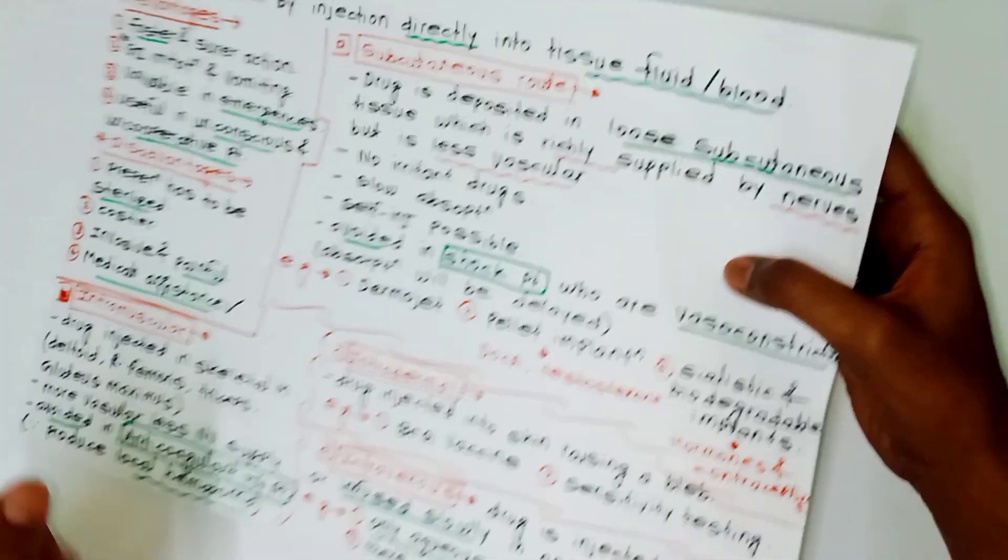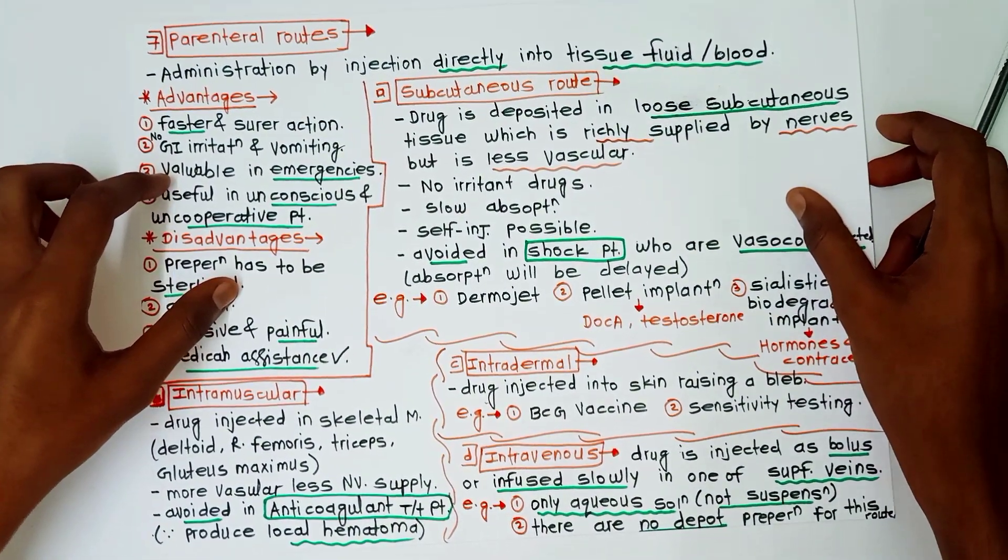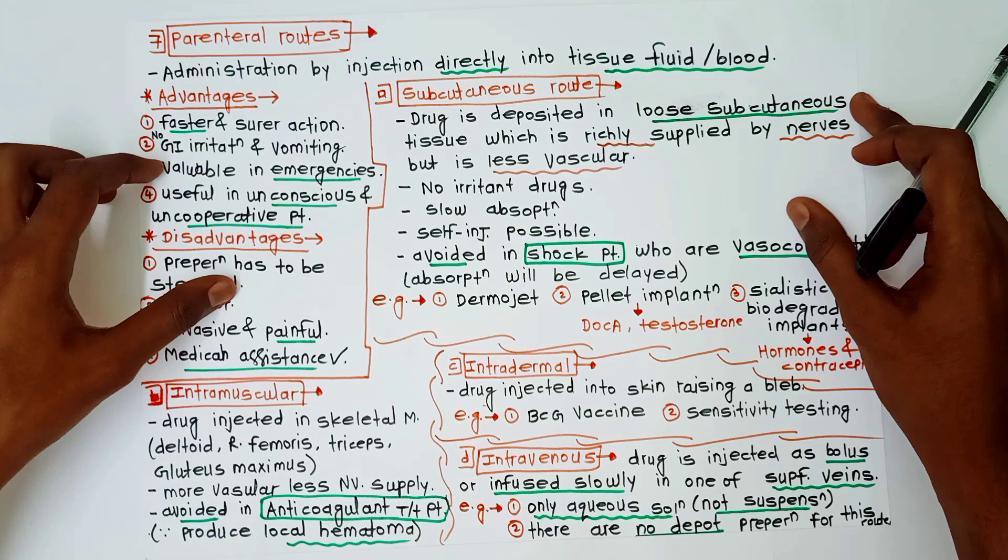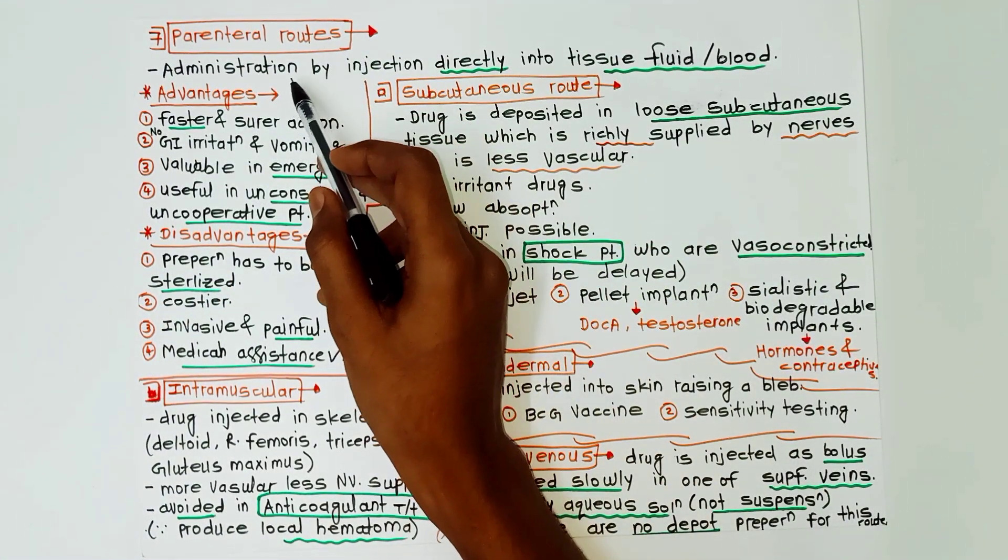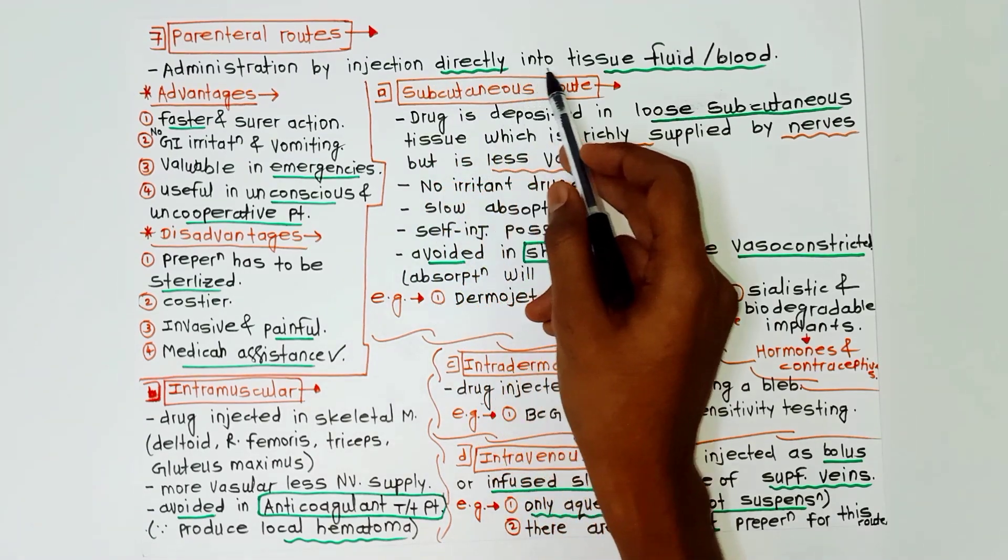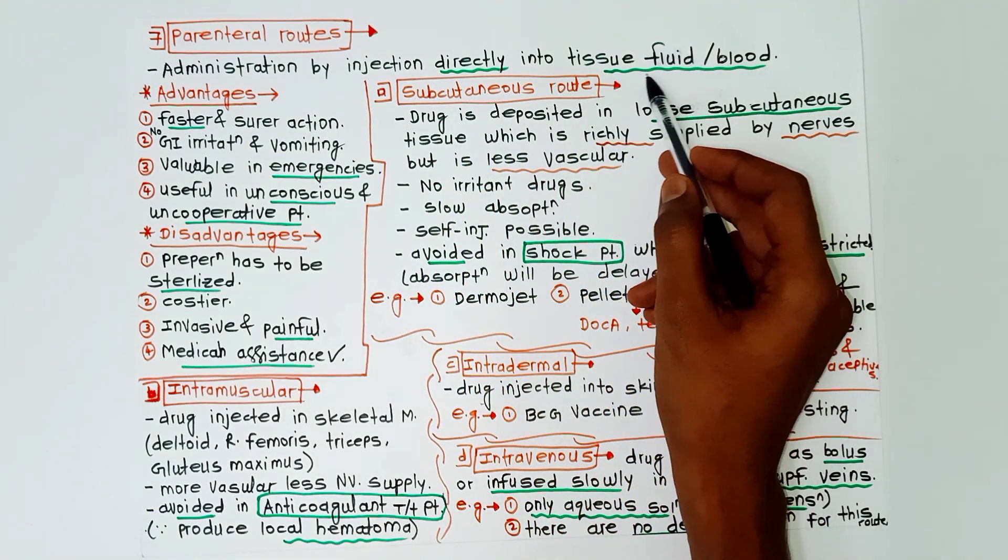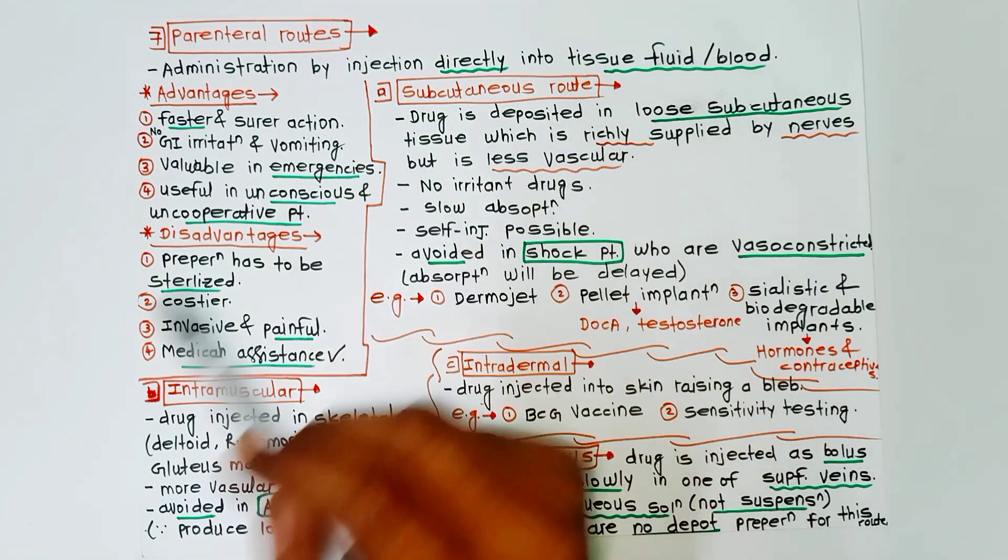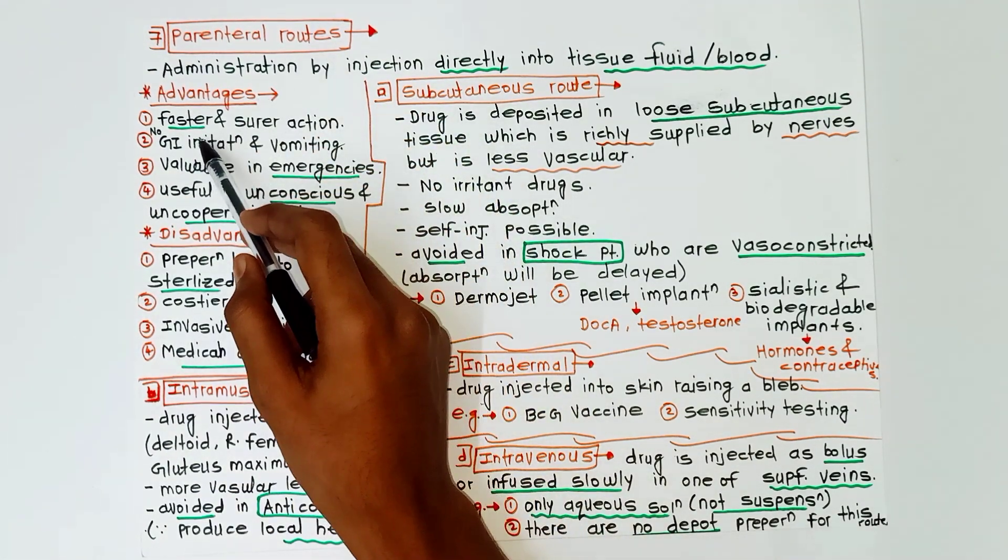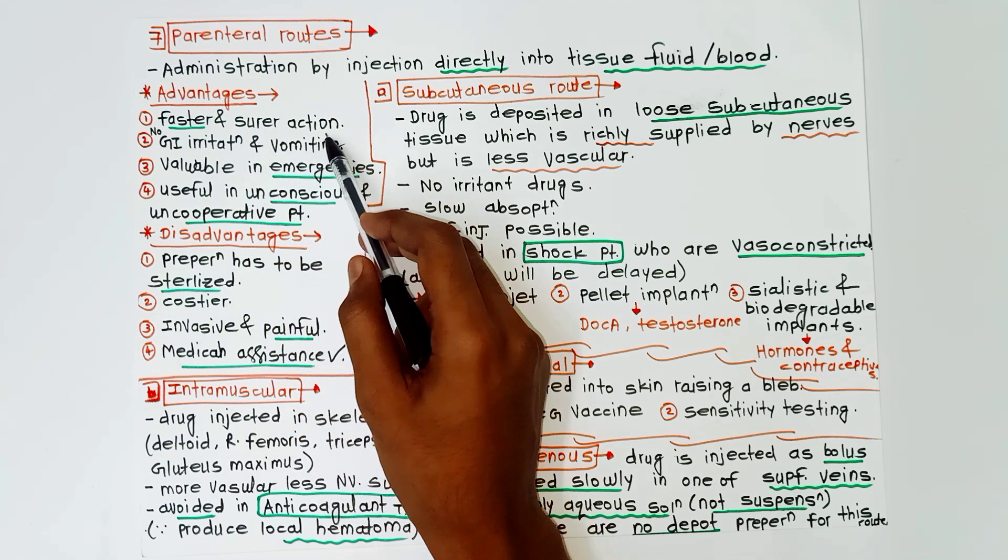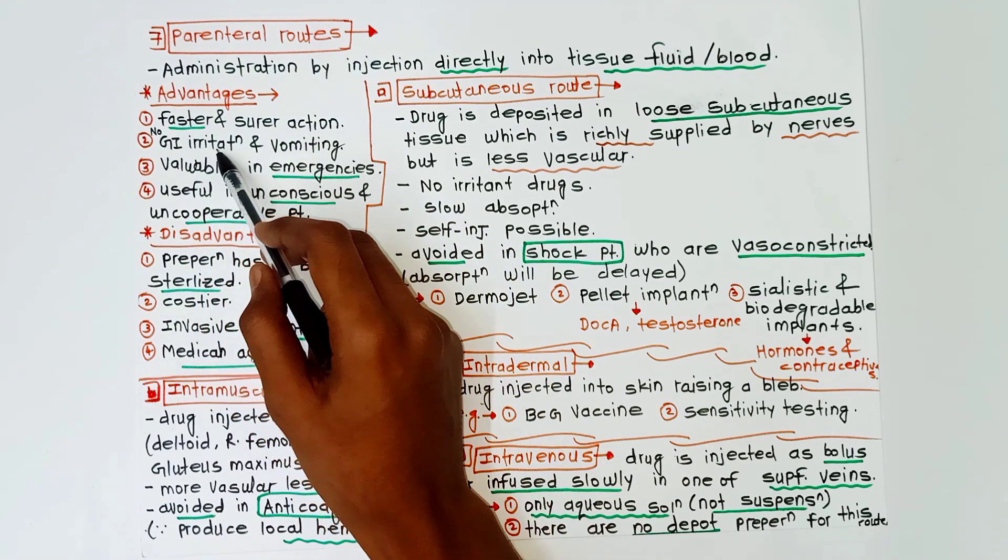After that, the last route which is remaining is parenteral route. Parenteral route is administration by injection directly into the tissue fluid or blood. This is important: tissue fluid or blood. Now advantages of the parenteral route: there is faster and surer action, no GI irritation and vomiting, and valuable in emergencies, useful in unconscious and uncooperative patients.